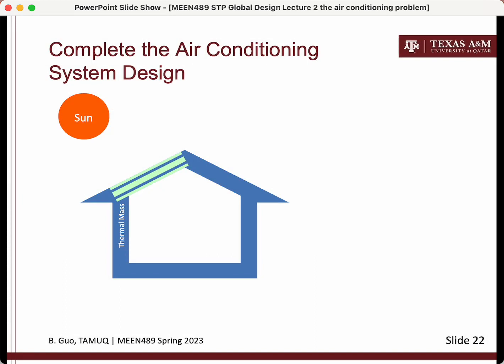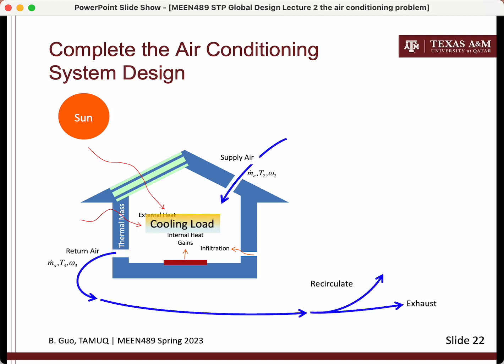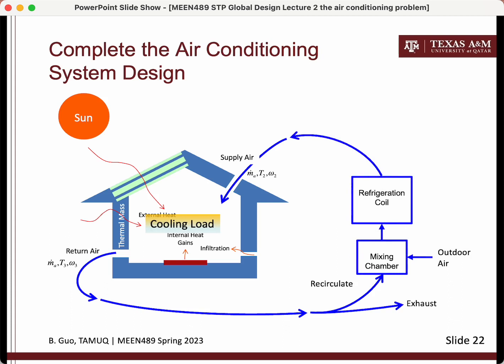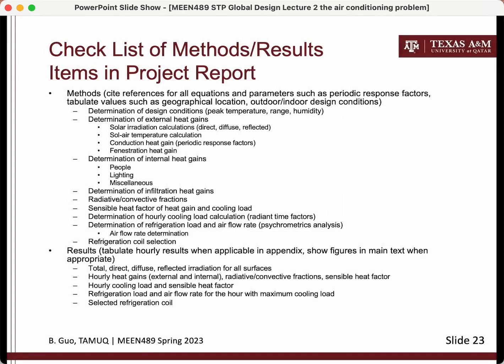To recap, in an air conditioning design process we find the cooling load based on the design weather conditions, solar radiation, building construction, occupancy, and operating schedule. Then we select the cooling and air handling equipment to fulfill the air conditioning purpose. The specific methods for equipment selection are not covered here. Finally, a checklist of methods, results, and items for the project report — provided for the MEEN 437 class and potentially useful in other courses — is given.